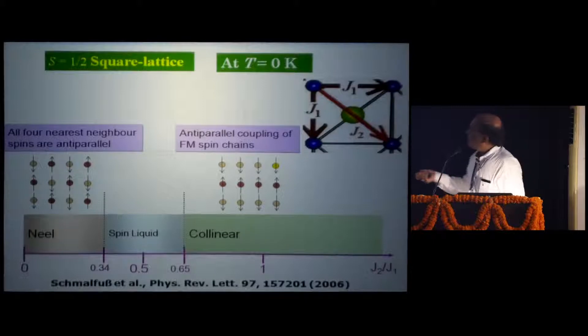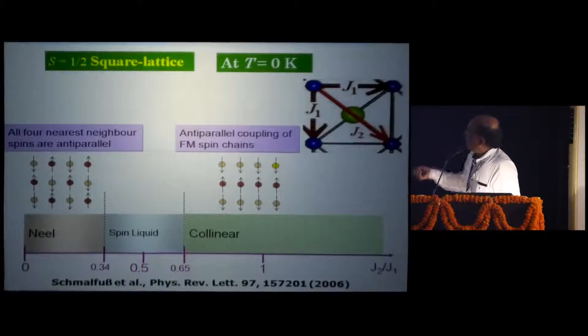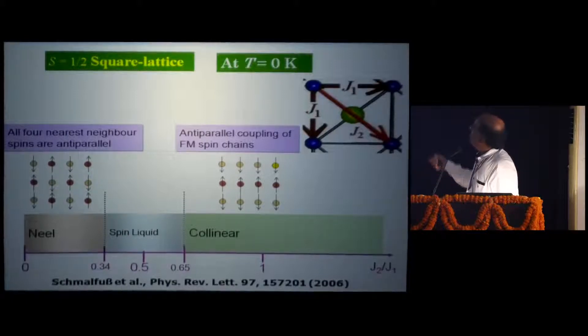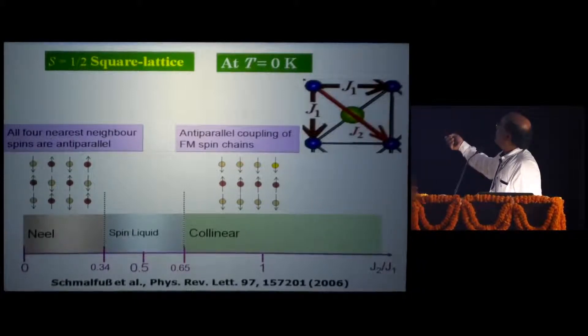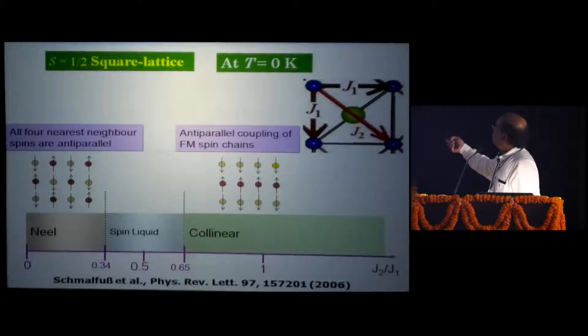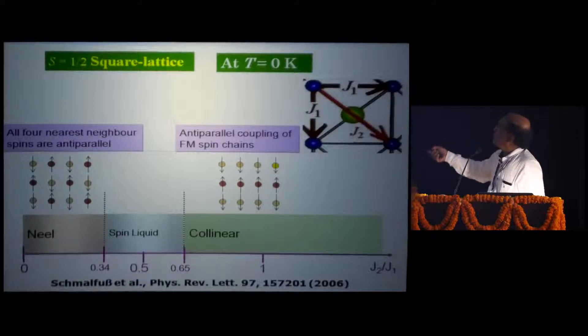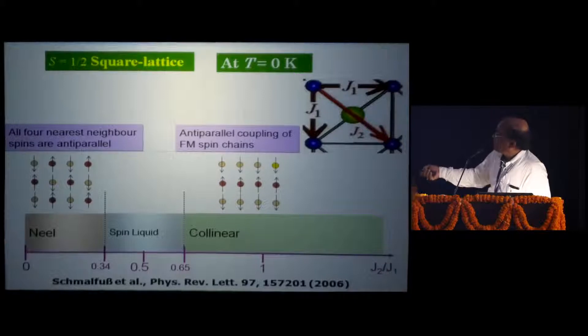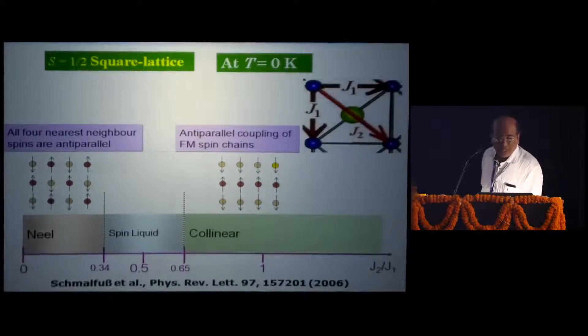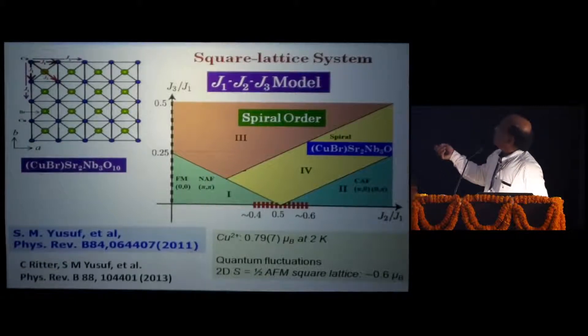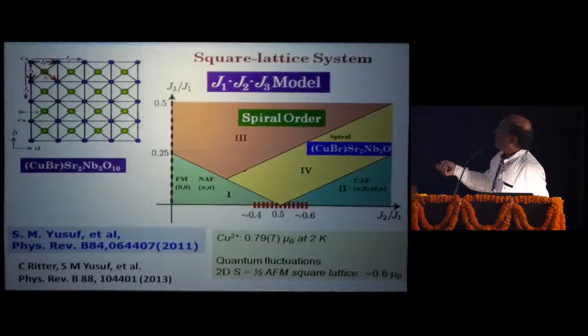In this case, to understand, there is a theoretical phase diagram which tells that what is plotted here is the ratio J2 by J1. J2 is the second nearest neighbor, this is the diagonal one in the square lattice, and this is the J1 along the edge. Depending upon the J2 by J1 ratio, at T equal to 0 for this spin half square lattice, theoretical phase diagram given in 2006 shows that over this J2 by J1 ratio, one expects the pure quantum mechanical state, the spin liquid state. But the spiral structure is not reflected in this phase diagram. But when you look at the literature, indeed there is another model which is called J1, J2, J3 model, very famous model.